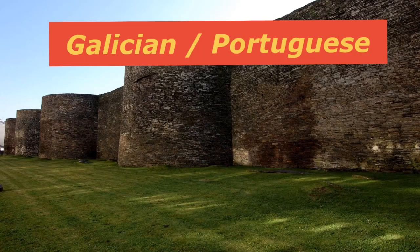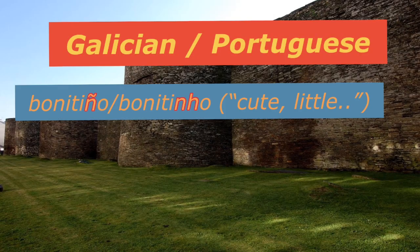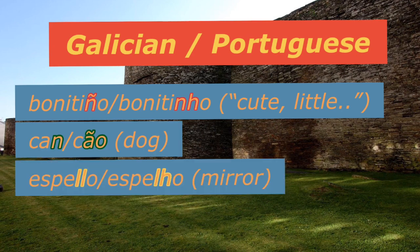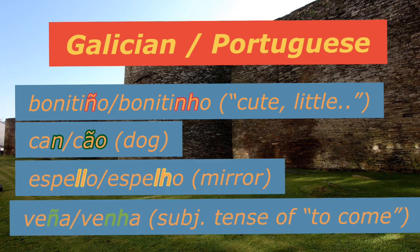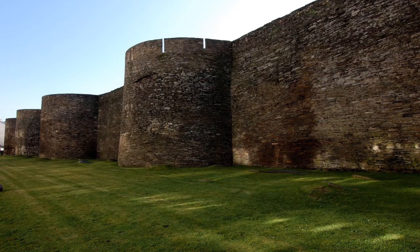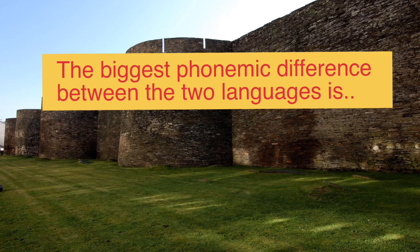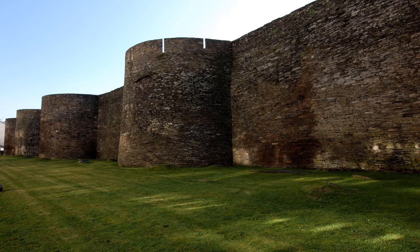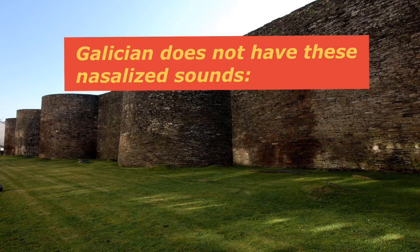For example: bonitinho or bonitinha, can, espello or espejo, venia. The biggest difference is that Galician doesn't have any nasalization in the same way that Portuguese does. Galician does not have the nasal sounds found in Portuguese.